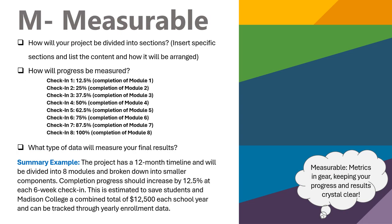Measurable — metrics keep your progress and results crystal clear. The next stage is to consider how you will track your progress and quantify it. Here are some questions to consider as you map out your timeline and think about measuring the final success of your project. How will your project be divided into sections? List the content and how you would like it arranged. How will progress be measured? For example, you can determine the percent completion of each project section.